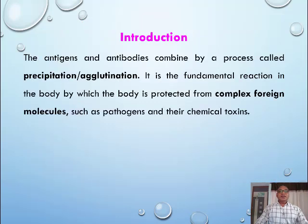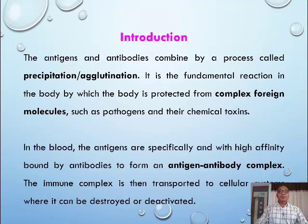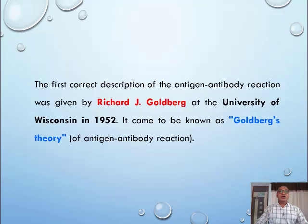Introduction. The antigen and antibodies combine by a process called precipitation or agglutination. It is the fundamental reaction in the body by which the body is protected from complex foreign molecules such as pathogens and their chemical toxins. In the blood, antigens are specifically and with high affinity bound by antibodies to form an antigen-antibody complex. The immune complex is then transported to cellular systems where it can be destroyed or deactivated.